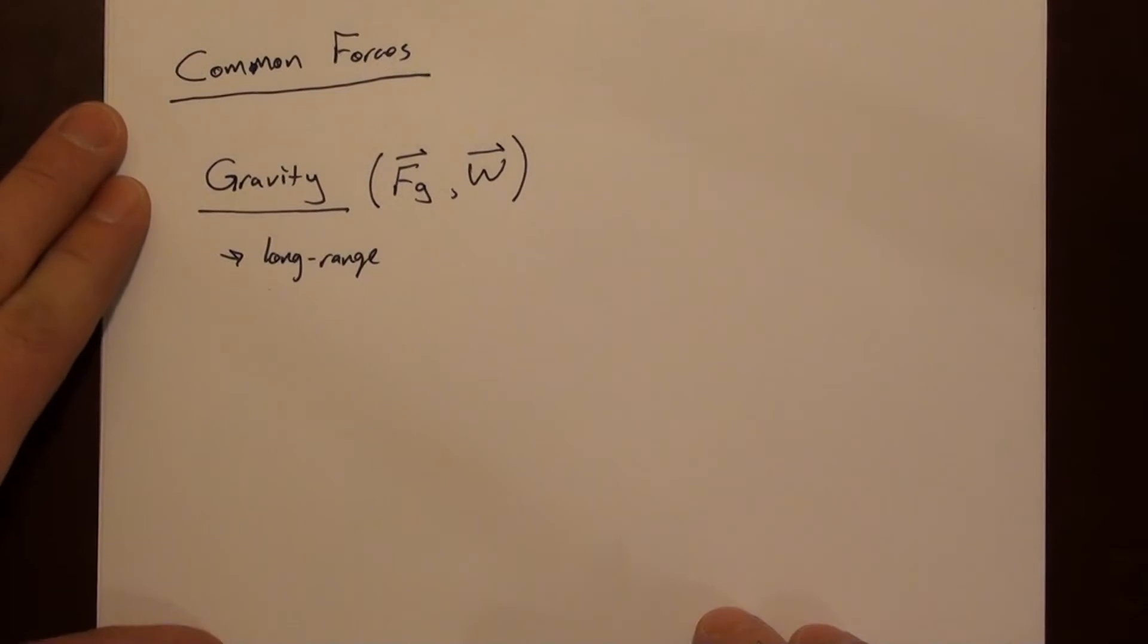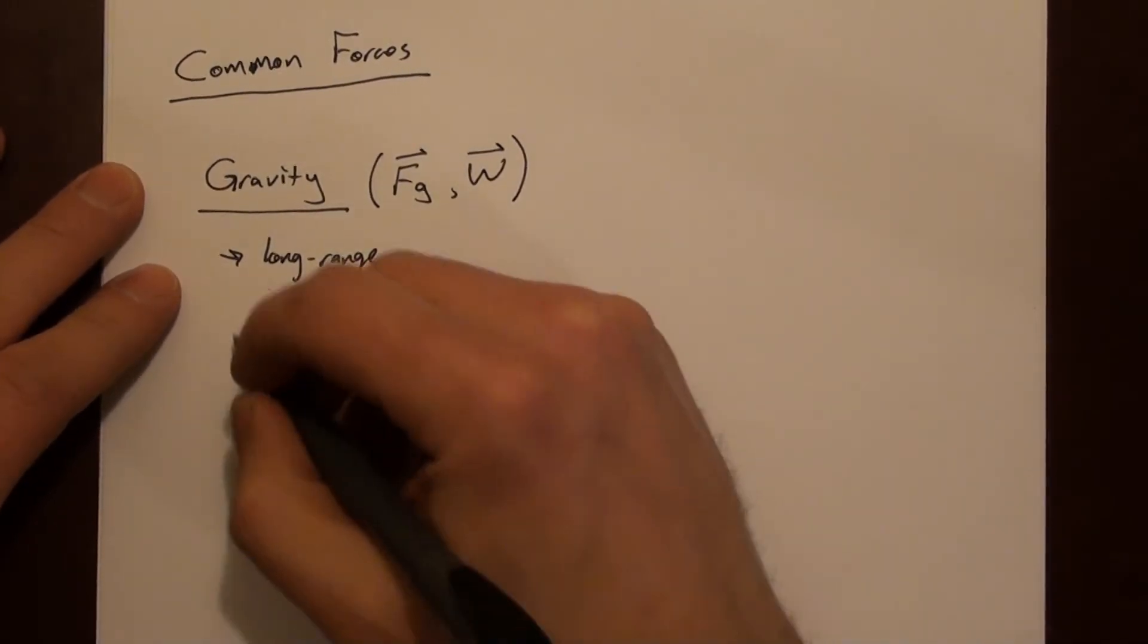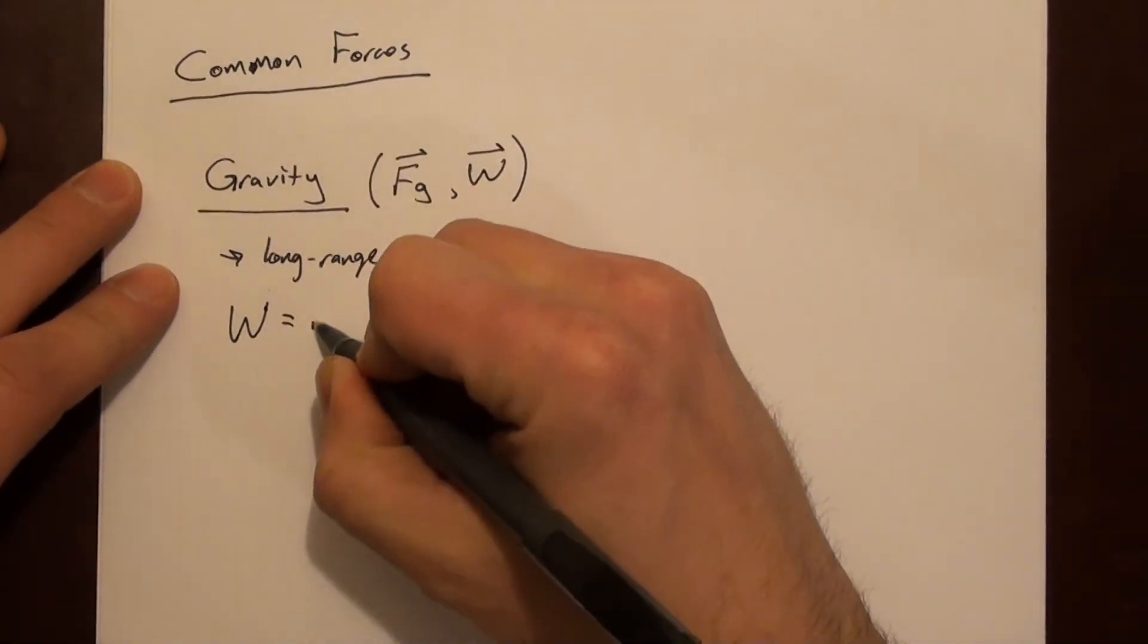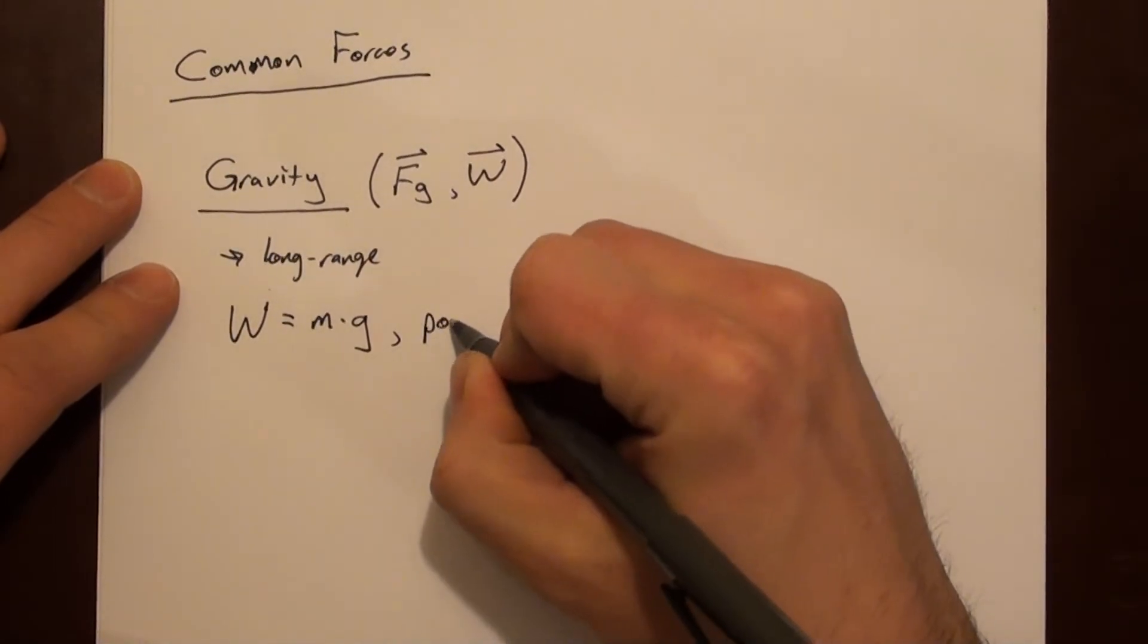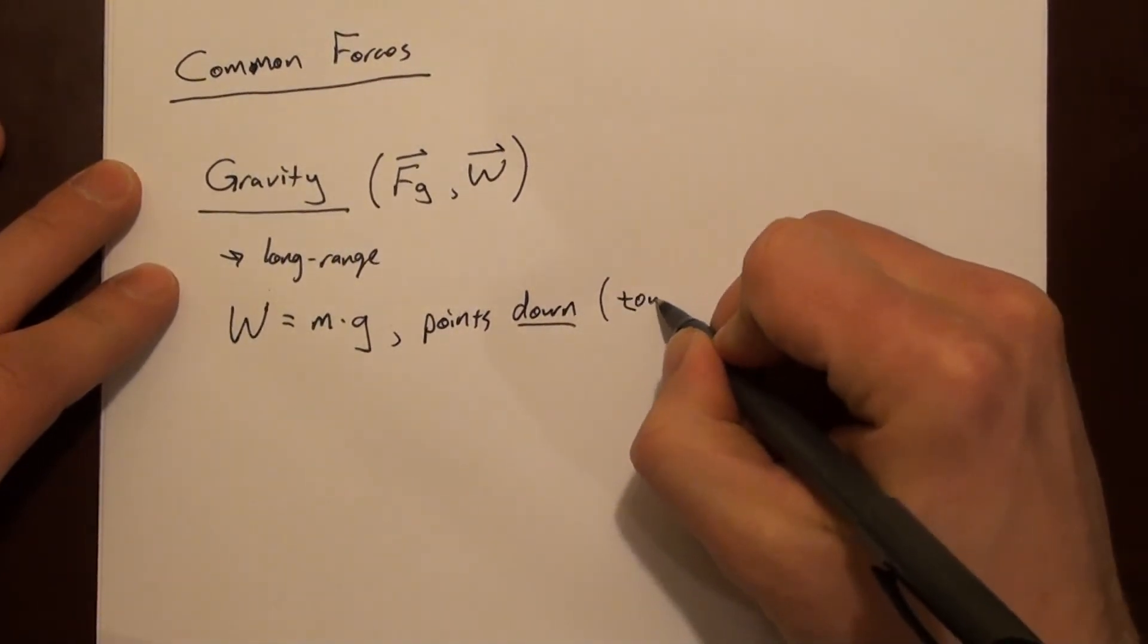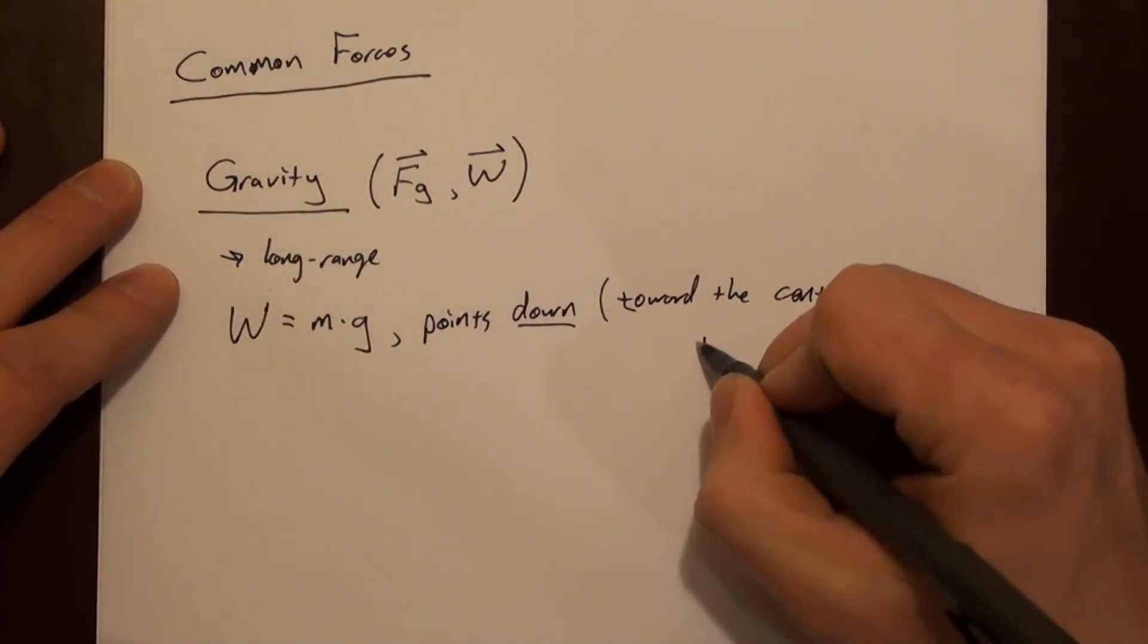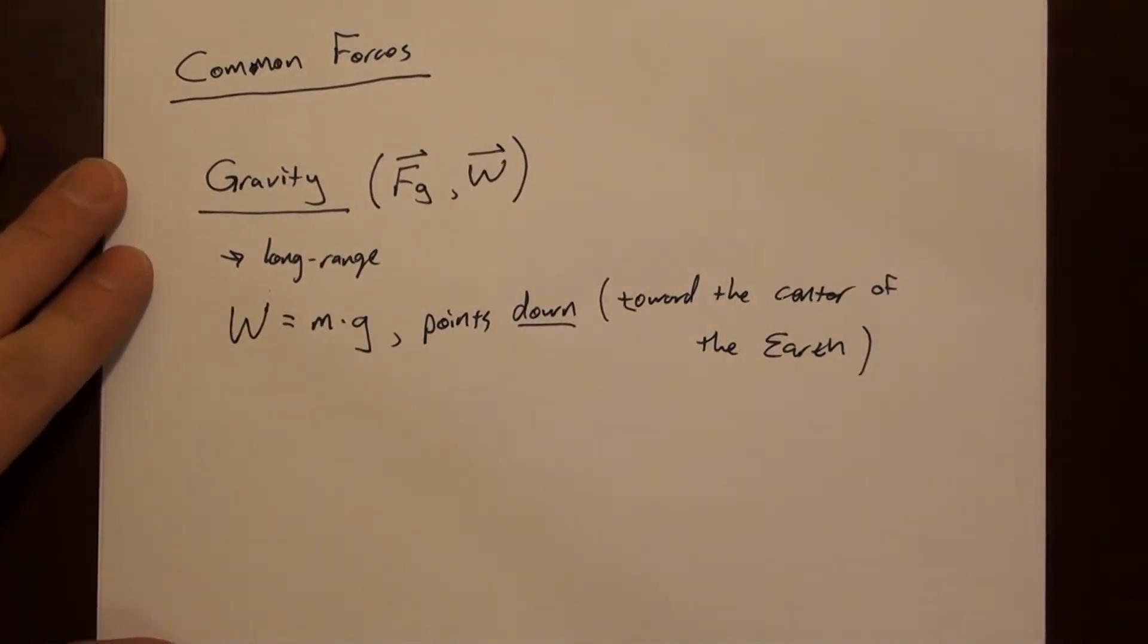In College Physics 2, you'll get to electricity and magnetism, and that's also a long range force. So, you may have seen this before, that we can write the gravitational force as mass times the acceleration due to gravity, mg. And this always points down, meaning toward the center of the Earth.